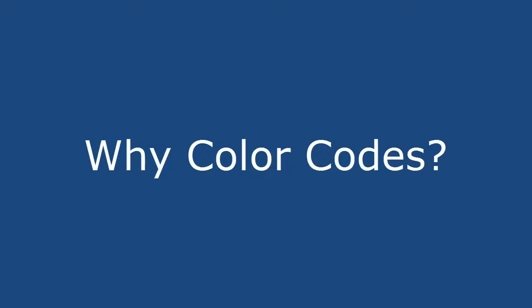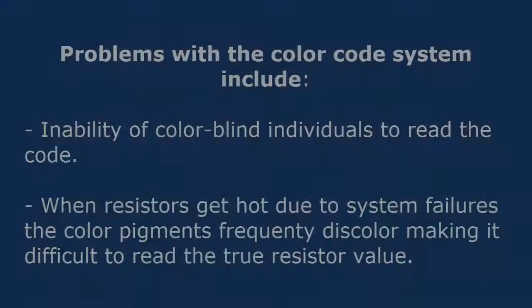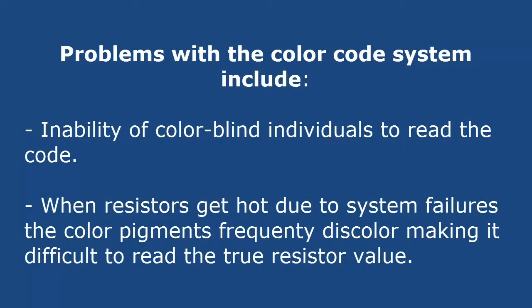The question is why do we have color codes, and it probably had to do a lot with the limitations of printing technology in the early days of electronics and the challenge of printing on cylindrical components. Being able to read the resistance of a resistor from all sides was a plus for this system. Problems with the system included the inability of colorblind people to read the code and the fact that colors tended to change when the resistors got hot and they couldn't be read anymore accurately.